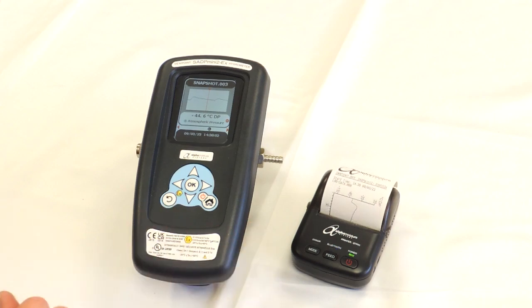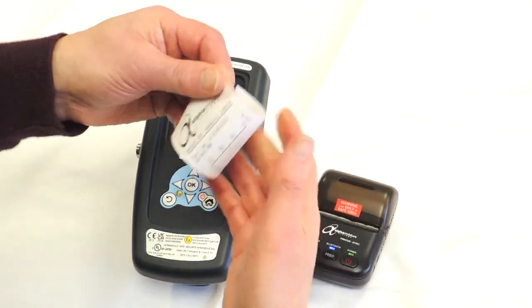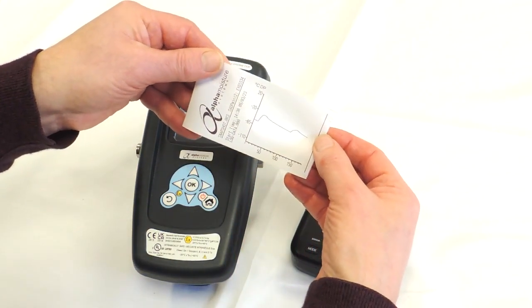So it prints on the paper that's provided with the printer and then we just tear it. And there's your logged data.